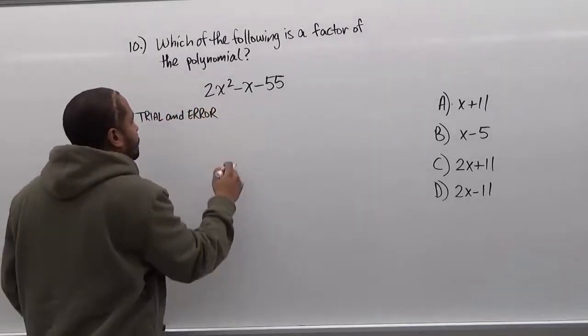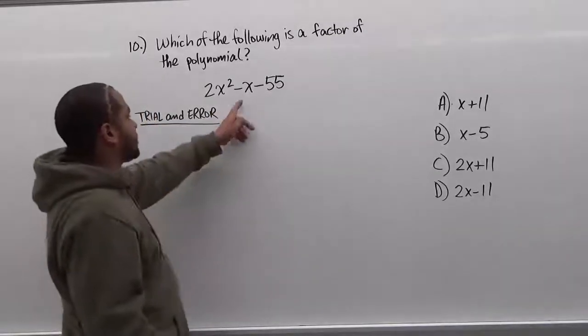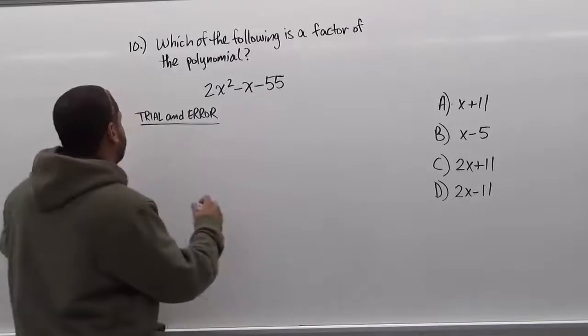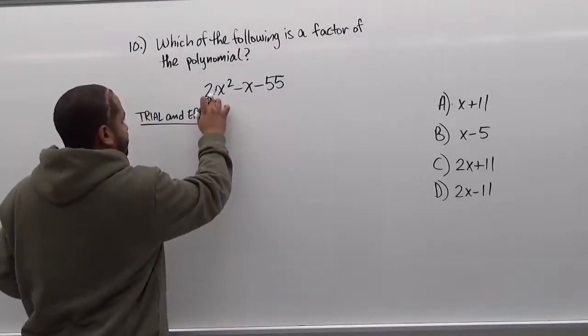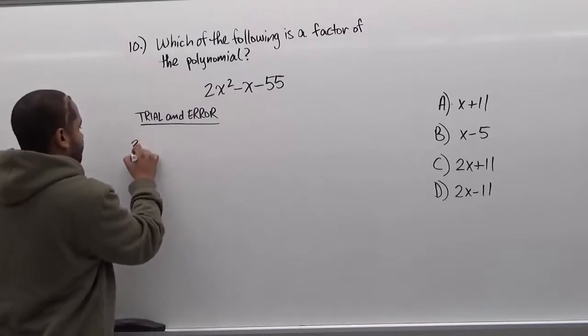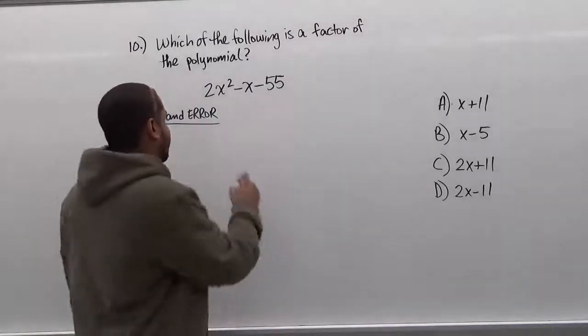In trial and error we want to play with the possible factors that will give us the middle term. And once we find the factors that give us the middle term, we've factored it completely. So our first step is going to be taking the factors of the 2, which are just 2 and 1.